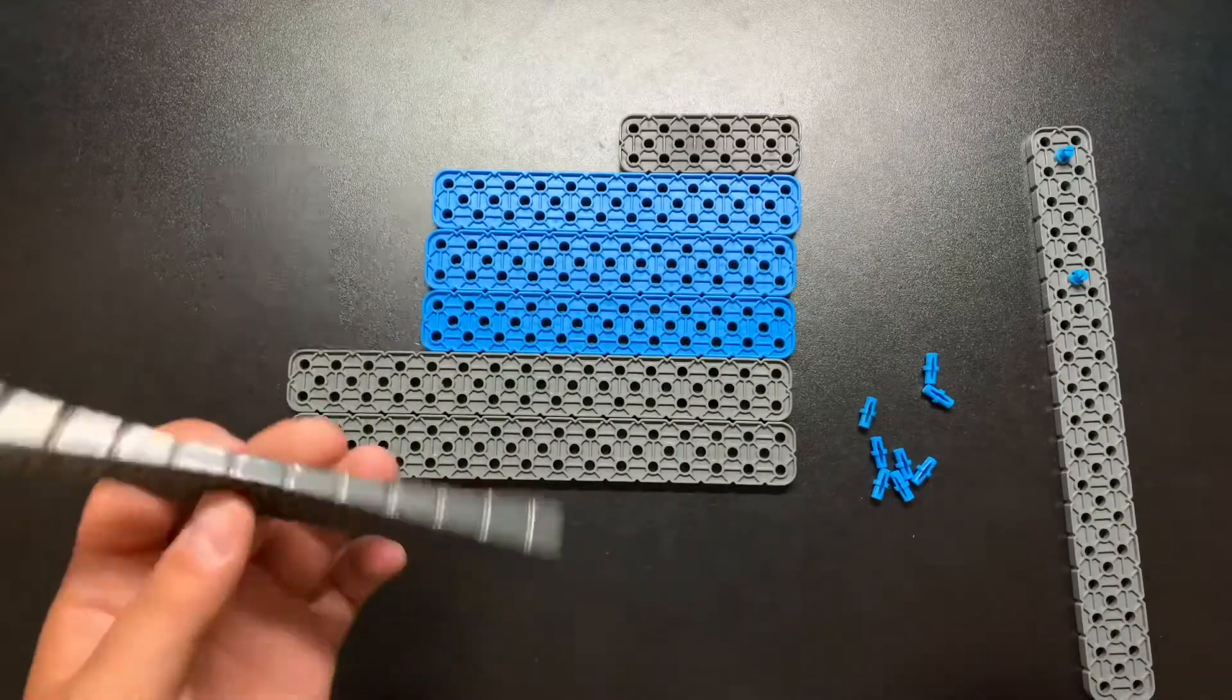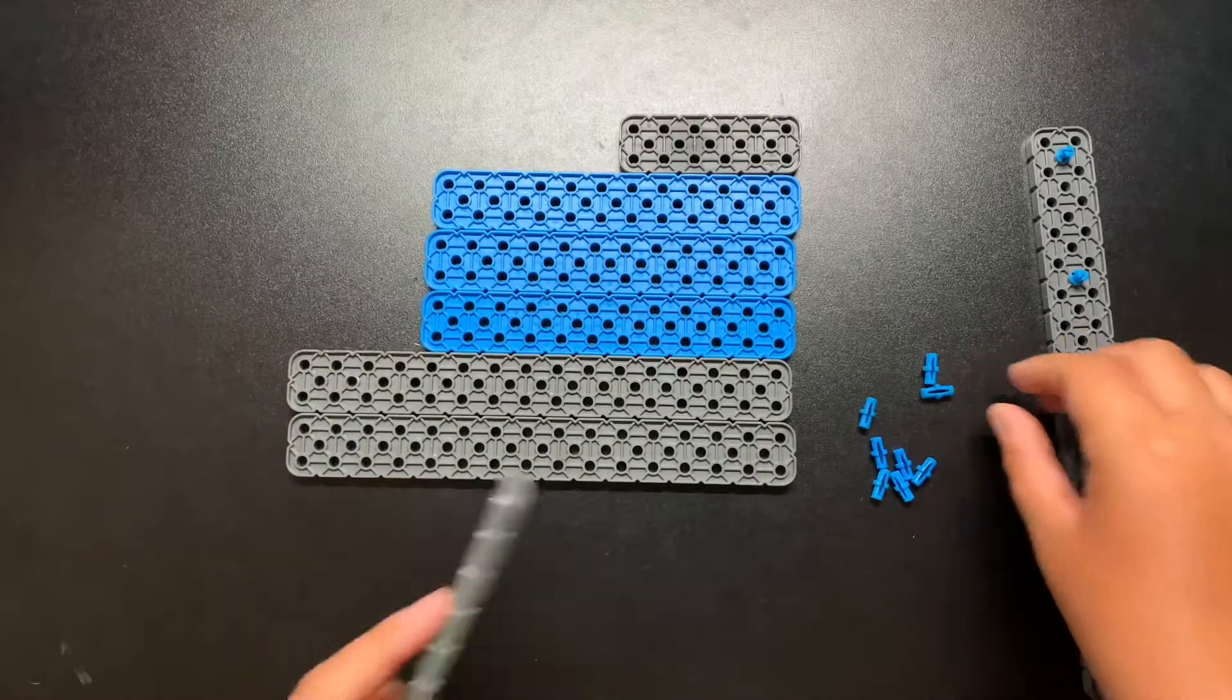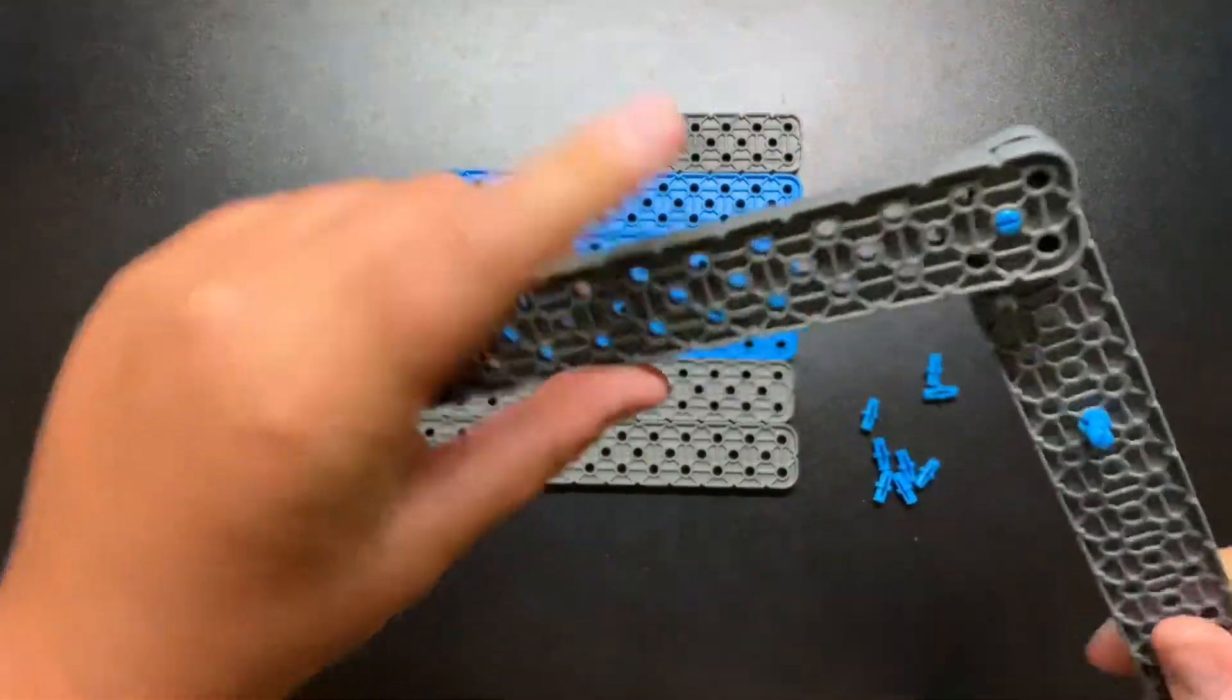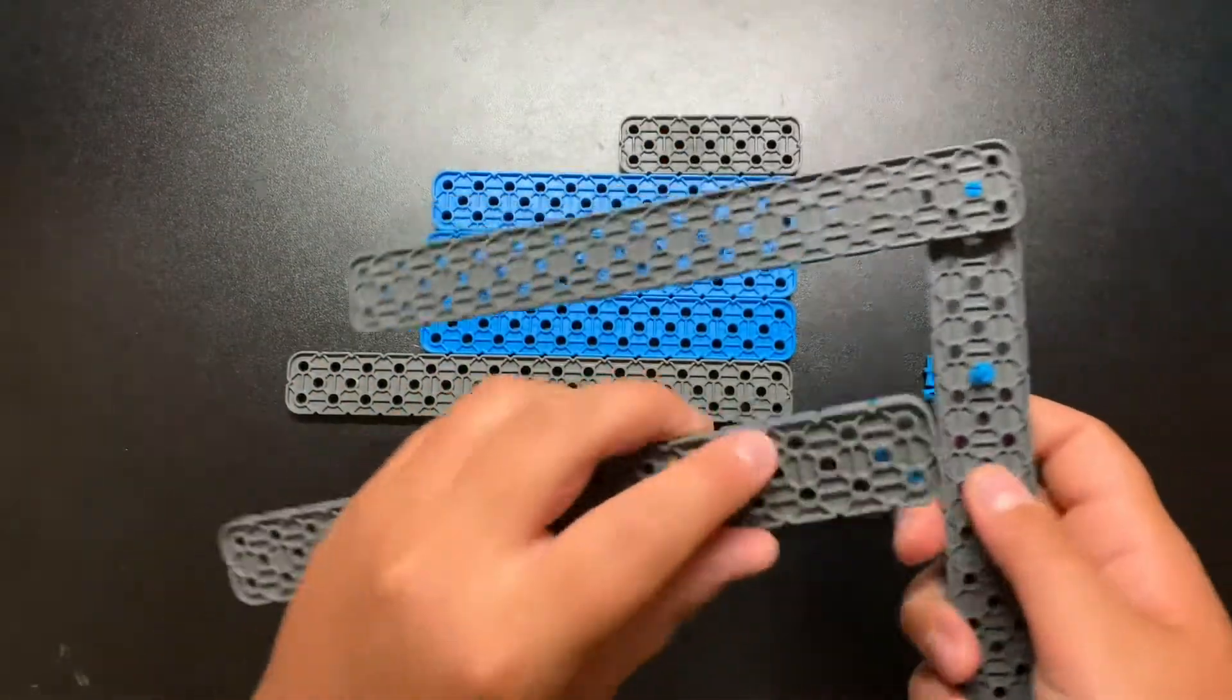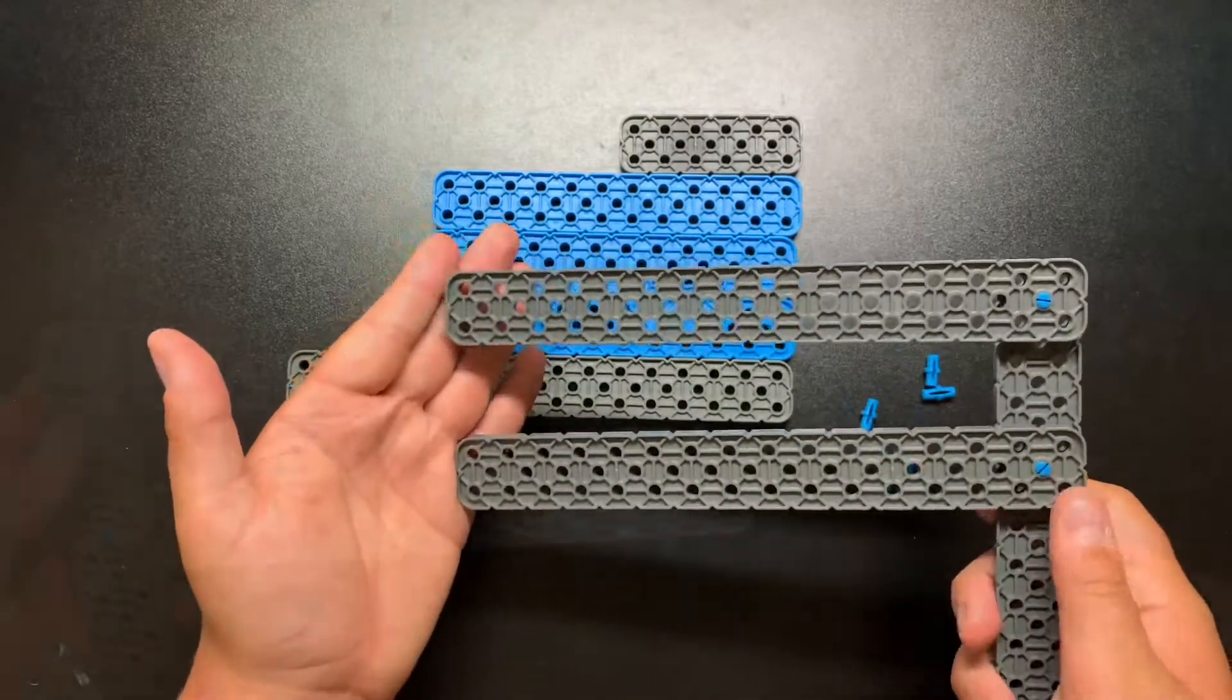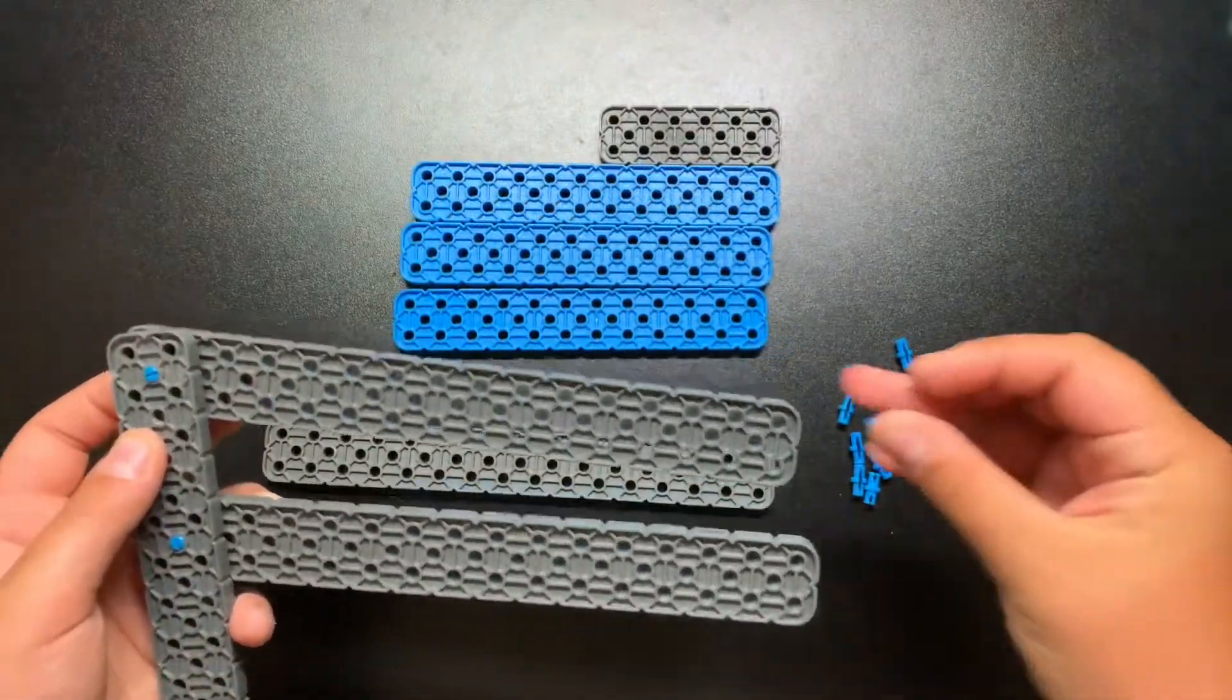And then get one of your 2 by 18 beams and get your 2 by 20 with the connector pins in it. Pop it in that first hole. Get another one of your 2 by 18 beams and snap it in that hole. Now get what you already have and flip it over.